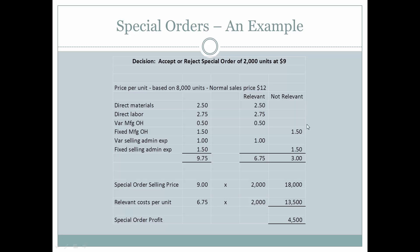What's not relevant is the fixed manufacturing overhead and the fixed selling and administrative expenses, which will be incurred irrespective of whether they accept the $9 order or not. So let's see if that's going to be profitable. The special order selling price of $9 times 2,000 units, less the relevant cost per unit times 2,000 units, yields a special order profit of $4,500. In that instance, they would accept the special order.